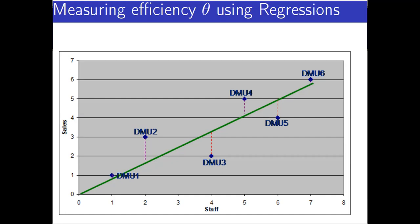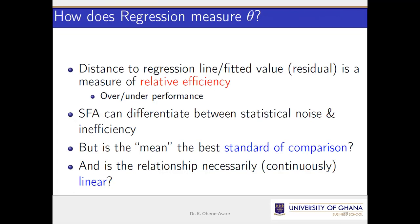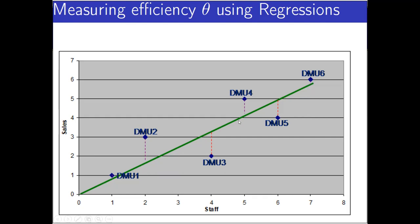How do you determine efficiency using regression? The distance to the regression line is a measure of efficiency — the regression line becomes the benchmark. If you are above the line, you are efficient; if you are below the line, you are inefficient. So which firms are efficient? DMU 1, 2, 4, and 6.